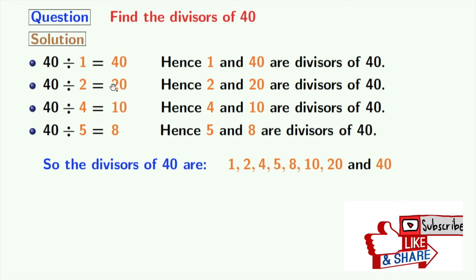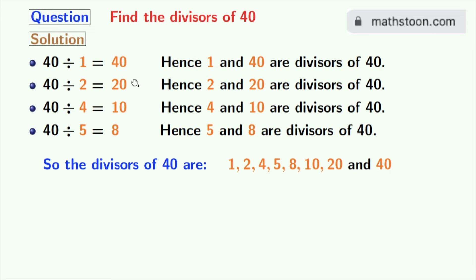So the divisors of 40 are 1, 2, 4, 5, 8, 10, 20 and 40. Thus the total number of divisors of 40 is 8.